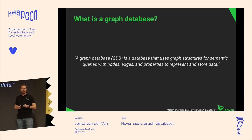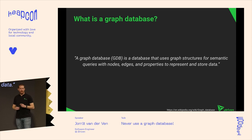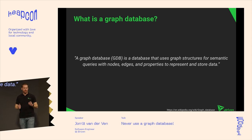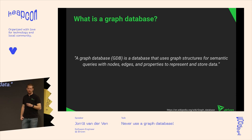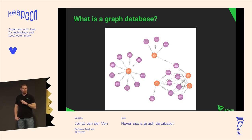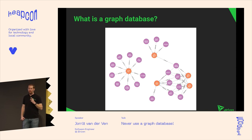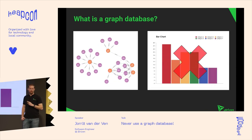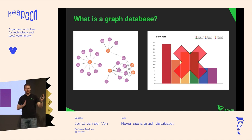If you don't know what a graph database is and want to start, of course what all developers do is just type it into Google. You'll find on Wikipedia a definition — I'm not going to read it for you — but the most important thing is: nodes, edges, and properties. If you Google "graph" on Google Images you'll find charts, but I'm not going to talk about that. So if you came here for charts you can leave — maybe there's a talk about Grafana or Excel.